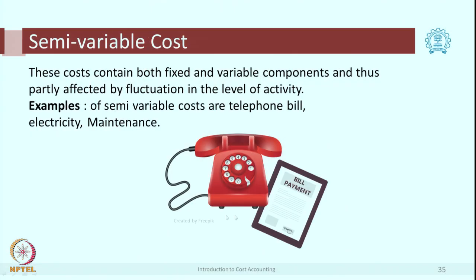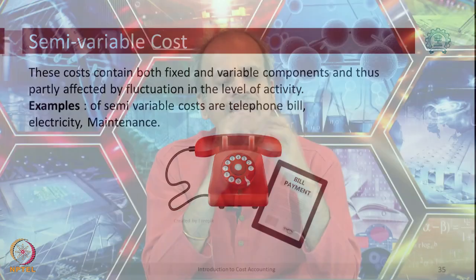There are certain costs which are in between — they have some component of variability and some component of fixed. That is called a semi-variable cost. Example is a telephone bill. Old fixed-line telephones used to have a fixed rent and for every call you had to pay extra — that is why it is a semi-variable cost. The rent part is fixed; call charges are variable. Even for mobile phones today, there could be a fixed charge and an extra variable amount per call. If you have an unlimited calling plan, the variable cost is zero and you only have a fixed cost.